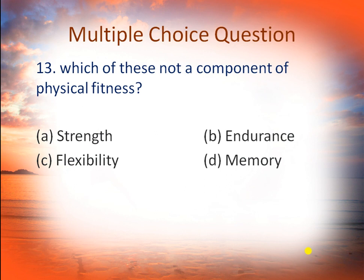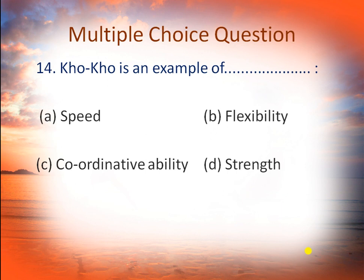The next question is: which of these is NOT a component of physical fitness? As you know, there are five components of physical fitness. Option A is strength, B: endurance, C: flexibility, and D: memory. The five components are strength, speed, endurance, flexibility, and coordinative ability. So D is the correct answer because memory is not a component of physical fitness.